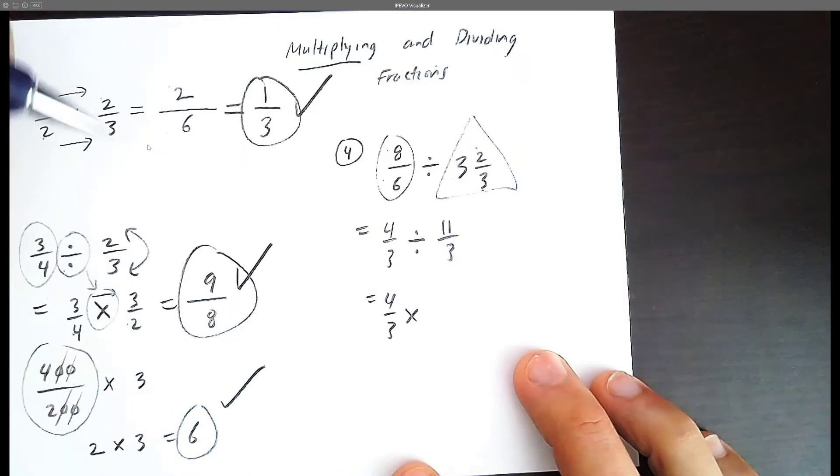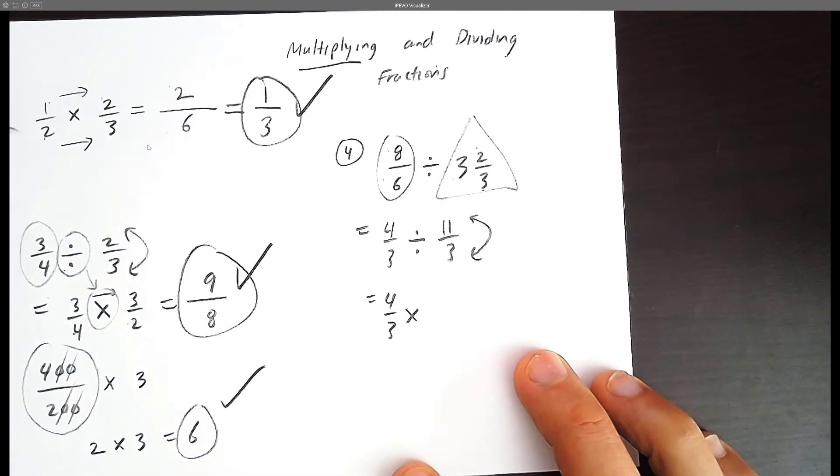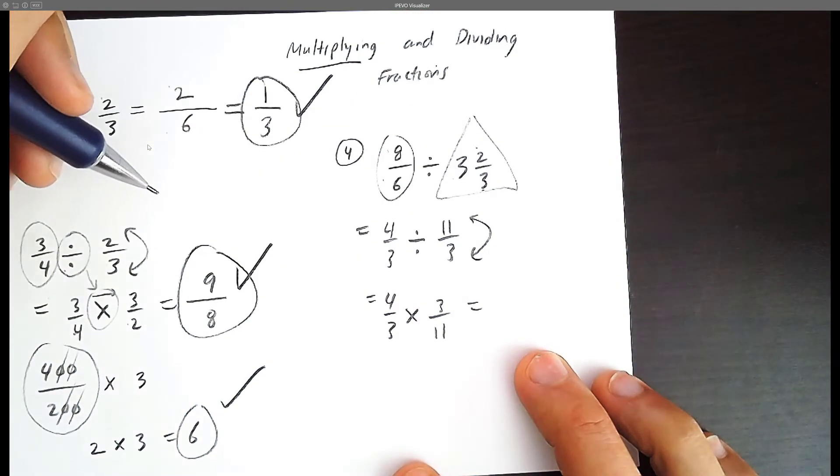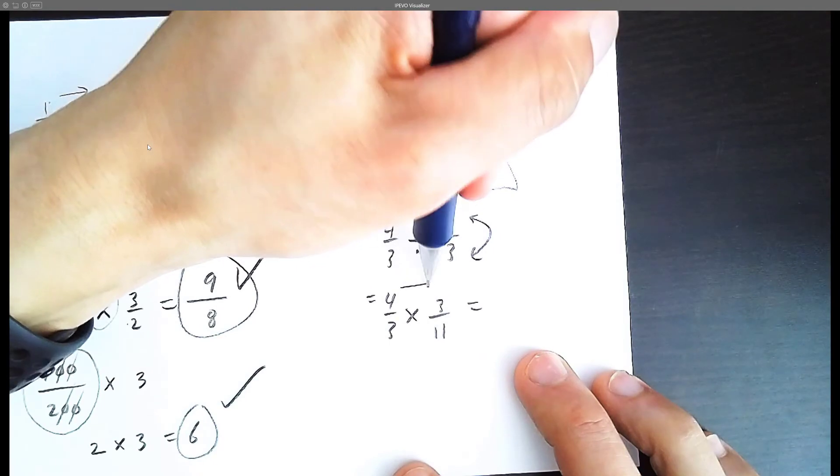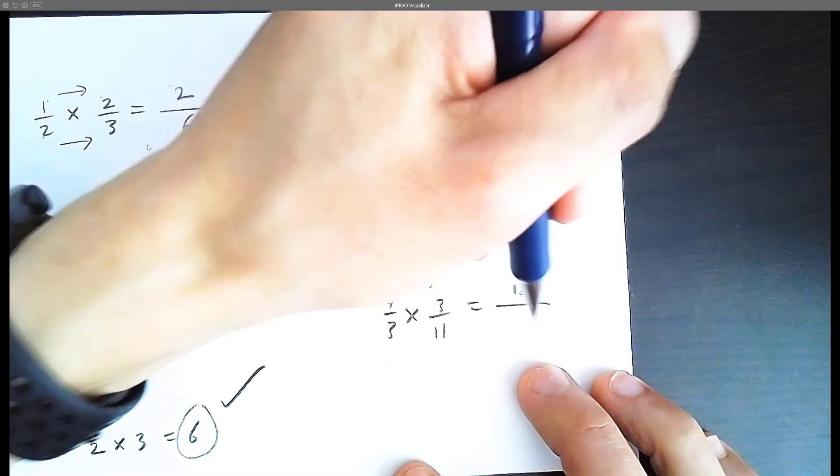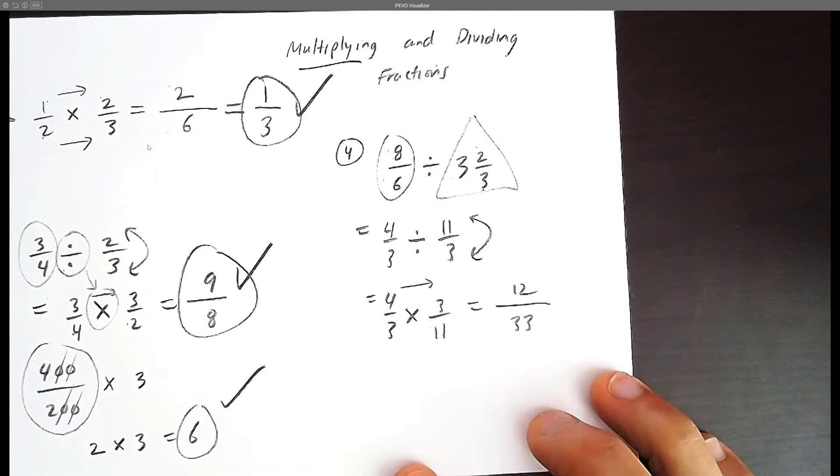We're going to change the division to a times. What do we do? We flip it. And you simply multiply across. Now if we really wanted to, we can just multiply across. 4 times 3 is 12, 3 times 11 is 33. But this would not be a fully simplified answer.